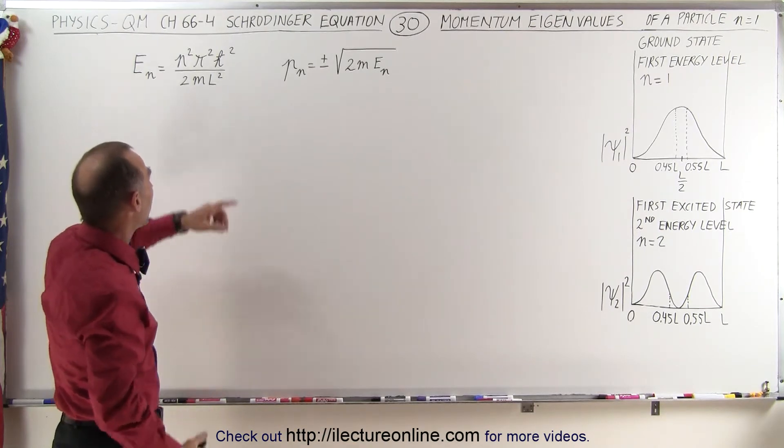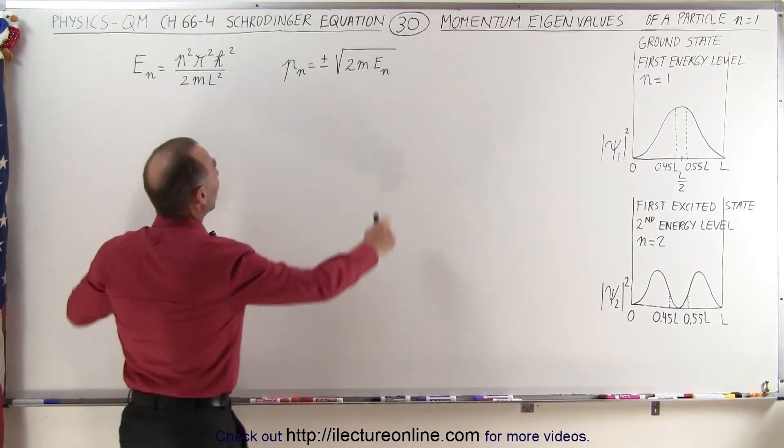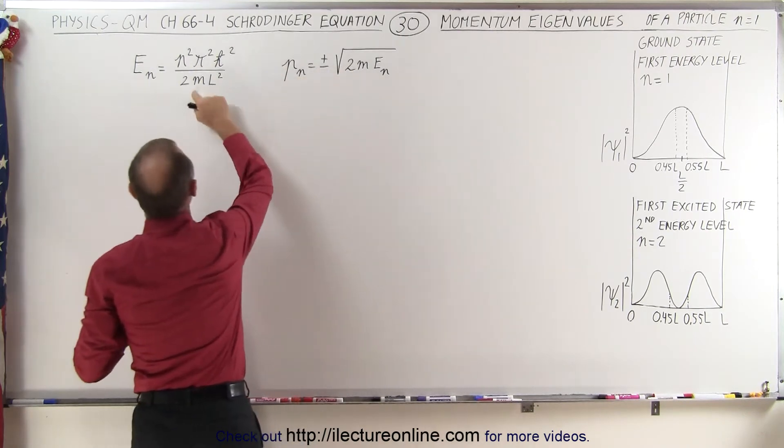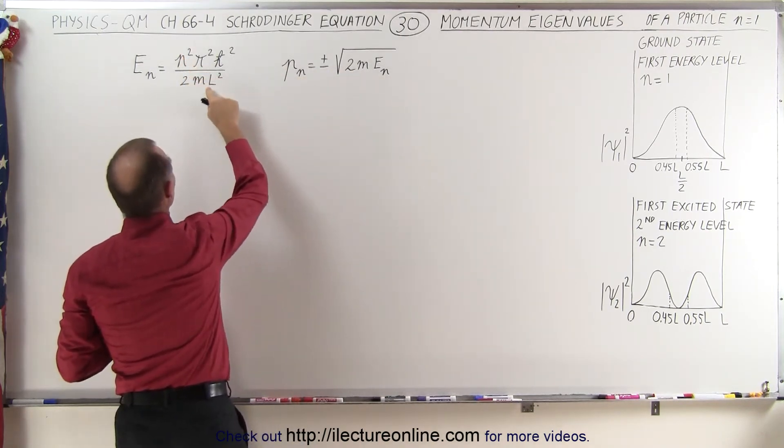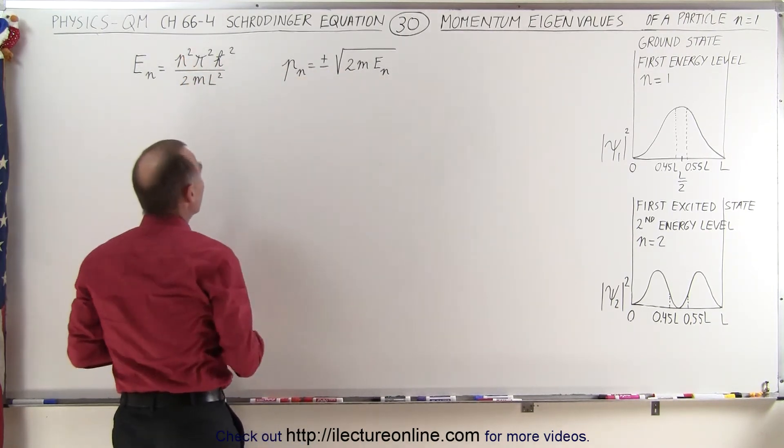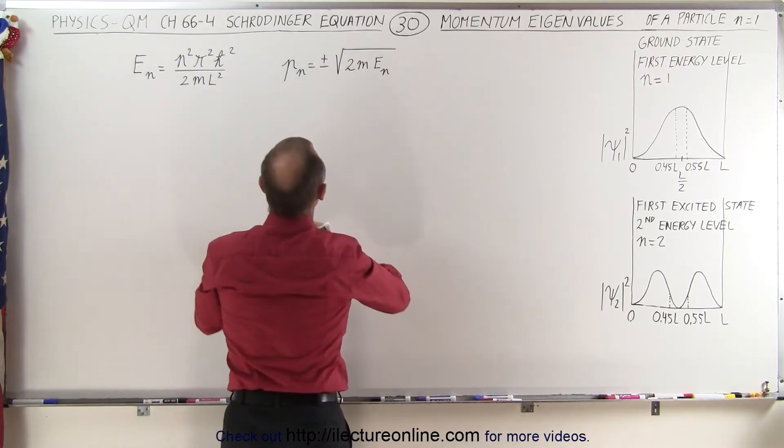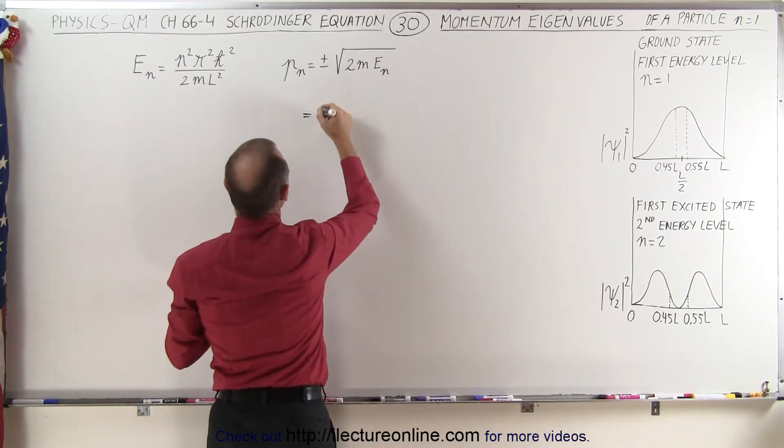So this is actually fairly simple. All we have to do is plug in what this value is in terms of the level, the mass, the length of the box, and of course h-bar. So when we plug this into here we get the value for the momentum.